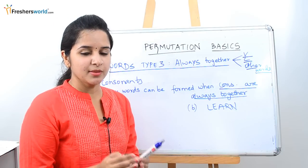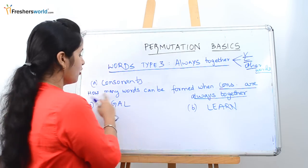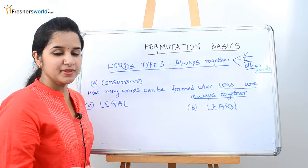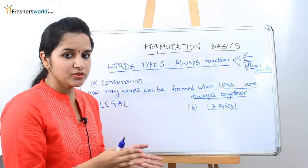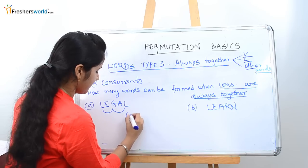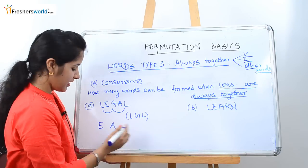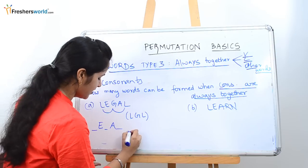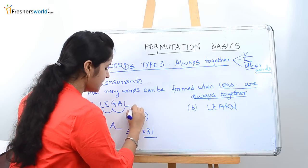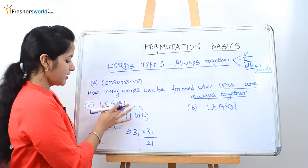In the previous concept, we dealt about vowels always together. A similar concept is applied for consonants always together. Let's take an example: how many words can be formed when consonants are always together? What we did in the earlier type, we always clubbed together the vowels. Now we have to do the opposite — we have to club the consonants together. For the word LEGAL, what are the consonants? L, G, and L. So L, G, L together. Remaining letters are E and A. What are the various places L, G, L can be arranged? There are three places, so it is 3 factorial ways. Within this, how many ways can they be arranged? It is 3 factorial, and since L is repeated twice, divide by 2 factorial. Once you solve this, you will know how many words can be formed using the word LEGAL.